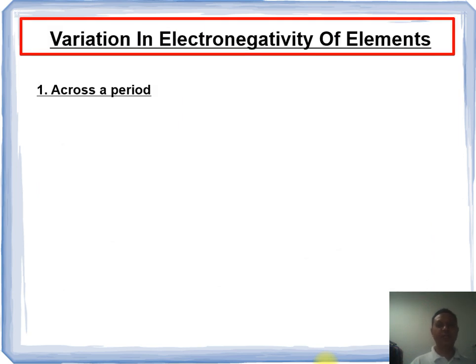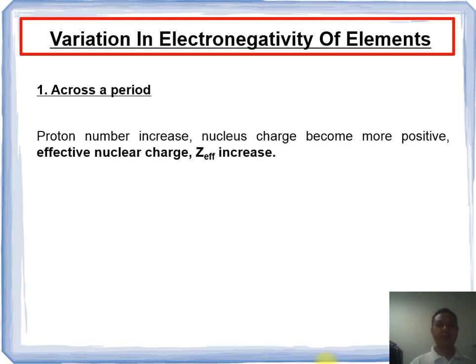Variation in electronegativity of elements: First, across a period. When across a period, proton number increases, thus nucleus charge becomes more positive and effective nuclear charge, Zeff, increases.